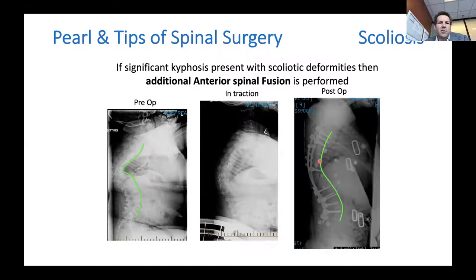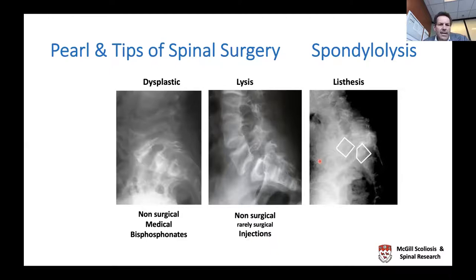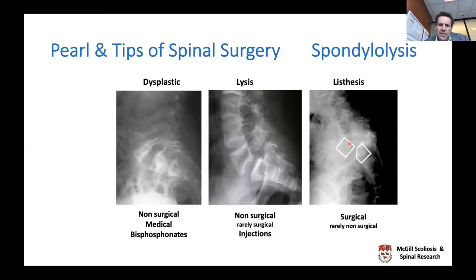For spondylolysis surgical management: dysplastic types are non-surgical—focus on minimizing gradual soft changes medically. Classic lysis can be managed with recurrent injections to reduce inflammation, preserving flexibility and maintaining a pain-free state; if that fails, selective local fusion across the segment is performed. The more challenging cases where the spine has displaced—slipping off the pelvis in the sagittal plane—are rarely manageable non-surgically and typically require surgical treatment.